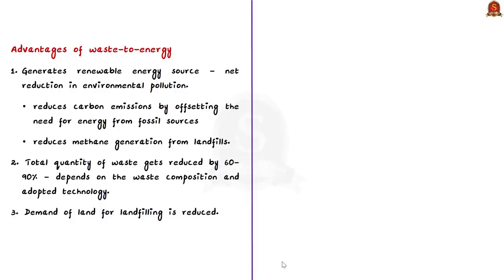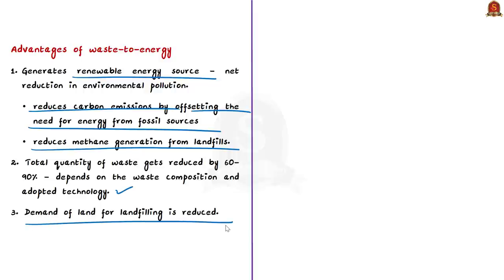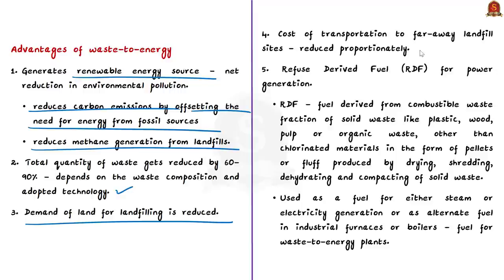What are the advantages of waste to energy? First, converting non-recyclable waste materials into electricity and heat generates a renewable energy source. It reduces carbon emissions by offsetting the need for energy from fossil fuel sources. It also reduces methane generation from landfills. That means there is a net reduction in environmental pollution. Second, the total quantity of waste gets reduced by nearly 60 percentage to over 90 percentage. This depends upon the waste composition and the adopted technology. Third, the demand for land for landfilling is reduced. Then, the cost for transportation of waste to far away landfills also get reduced proportionately.